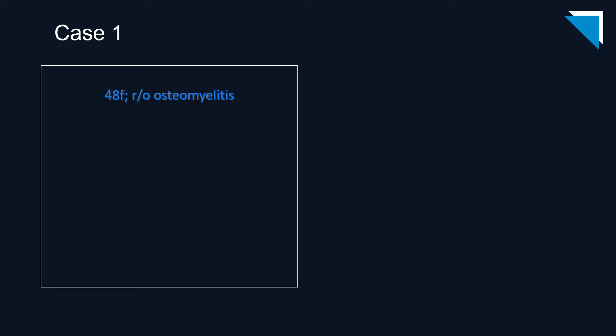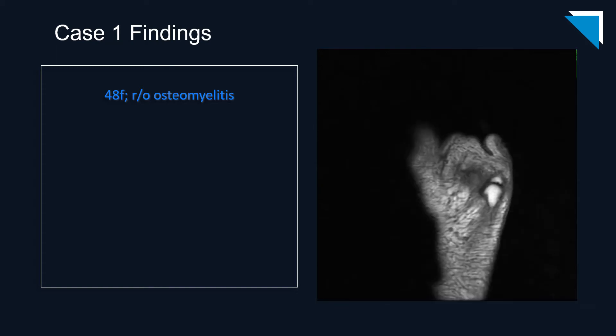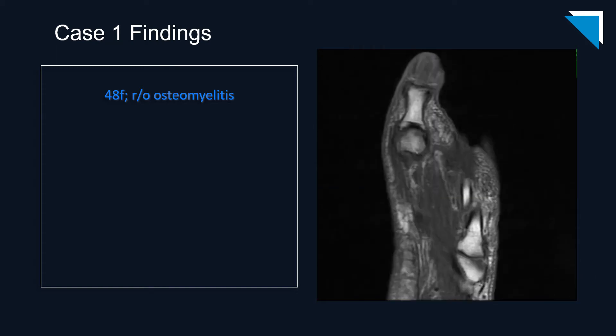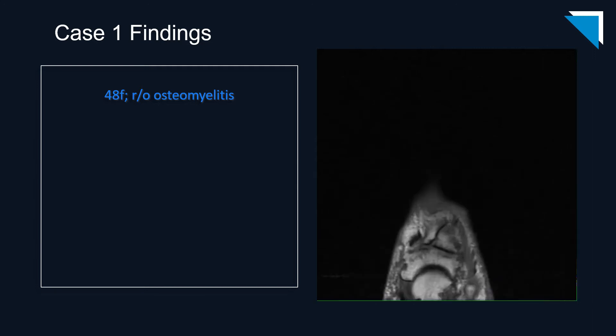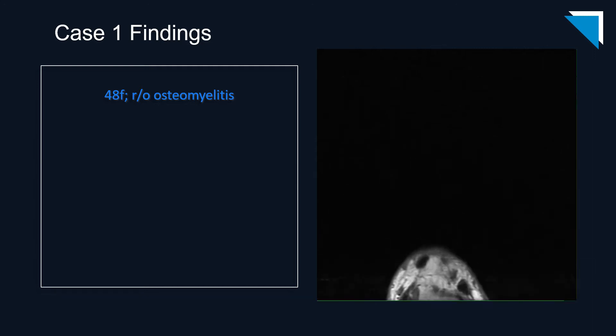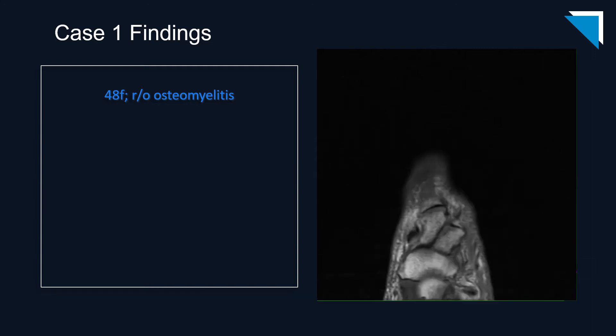With that, let's move on to some cases. Our first patient is a 48-year-old woman who arrives with a history of rule-out osteomyelitis. I tend to start with the axial and occasionally the sagittal non-fat suppressed T1-weighted sequence to get an overall picture of the bony findings.